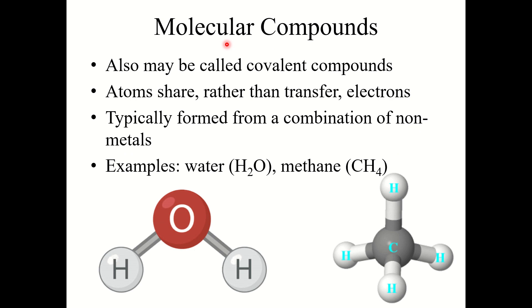Finally, molecular compounds — more commonly called covalent compounds — are typically formed from a combination of non-metals. Here the atoms share electrons rather than transfer them. For example, water H2O and methane CH4, which is the primary component of natural gas, are both composed of non-metals, making them molecular or covalent compounds. That is the end of Chapter 3 — in the next video we'll dive into Chapter 4 for more detail on ionic and covalent compounds.